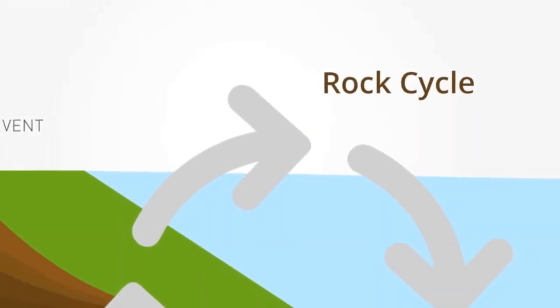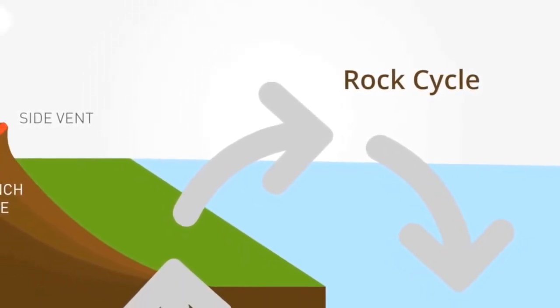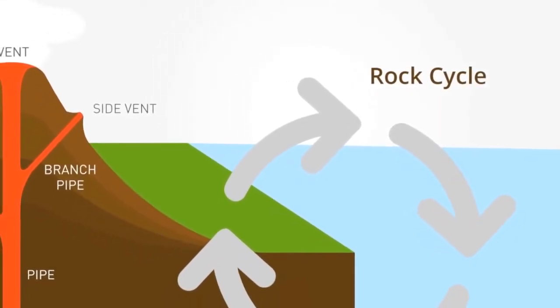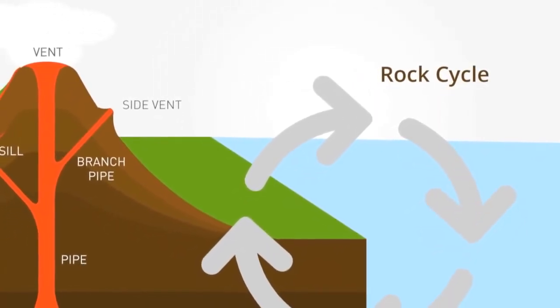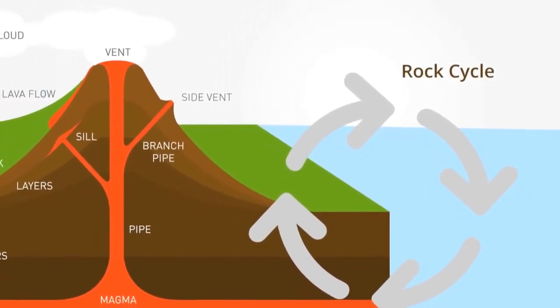Within each sphere, a process called a cycle takes place. For example, in the lithosphere we have the rock cycle, driven by the thermal energy within Earth's interior that releases minerals through ocean ridges and volcanoes that are weathered as they cycle through the Earth's crust and are eventually subducted, returning to their origin.